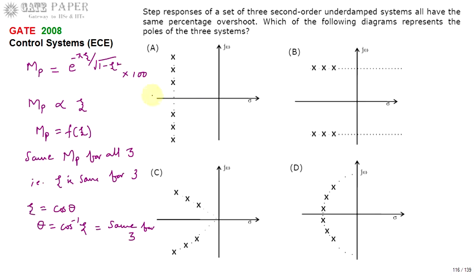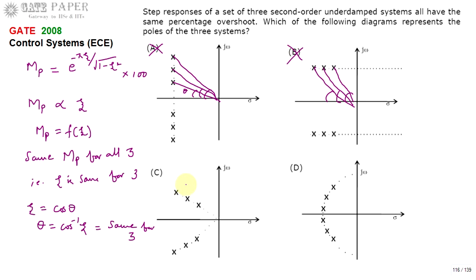Now we observe which is the right answer. For option A, the poles show different theta values — this theta, that theta, and another different theta — so all three systems have different theta values, making A incorrect. For option B as well, all three systems make different angles with respect to the negative real axis, so B is also not the right answer.